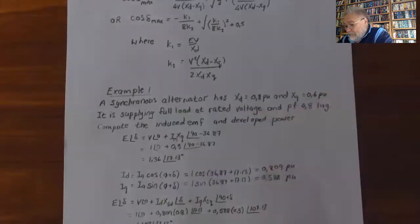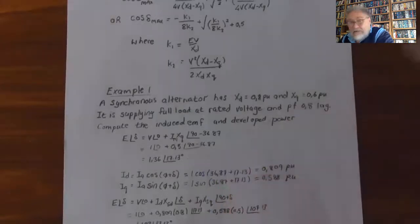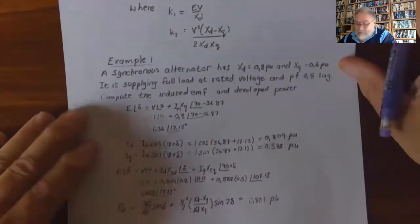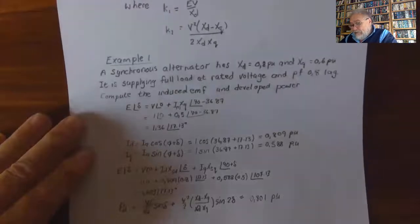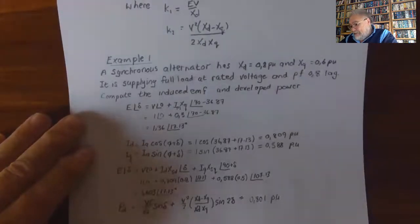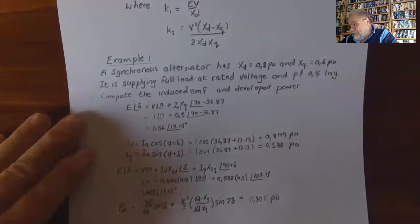Now E = V + Id·Xsd∠δ + Iq·Xsq∠(90 + δ), giving 1.603∠17.3°. If this angle matches the earlier calculated angle, the calculation is correct. The developed power, working in per unit, is: P = VE/Xd · sin(δ) + V²/2 · (Xd − Xq)/(Xd·Xq) · sin(2δ), which gives 0.801 per unit.